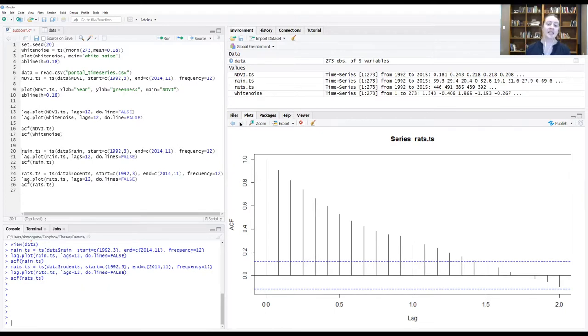These ACF plots can be really useful in helping you understand exactly how your time points are correlated with each other. There are two different ways that a time point in the past can have an influence on a time point in the future, and these plots are diagnostic of those two different ways.